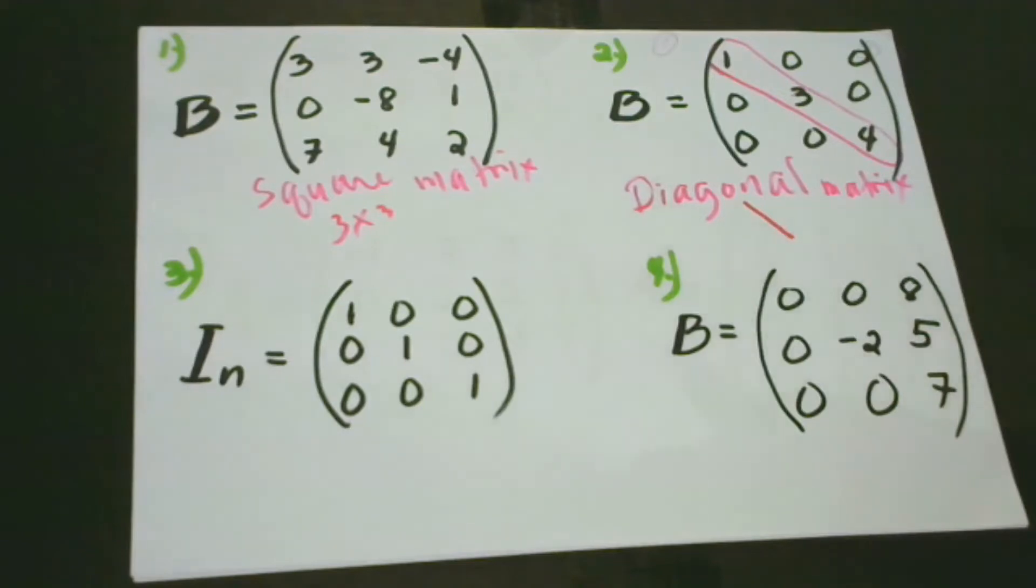Sometimes a square matrix and identity matrix, which we will have later, can be a diagonal matrix if it complies with the requirement that a diagonal matrix have entries that are 1 in its diagonal and anywhere else are 0.